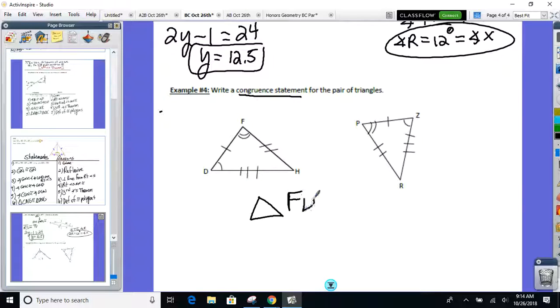Let's hear your version there. Number three, your version. FDH congruent to PZR. Let's find out if that's a good one. Let's see. F and P. Yep. D and Z. Got it. H and R look pretty good. Yep. And again, yours is probably correct as well, just as long as the angles and sides match up.